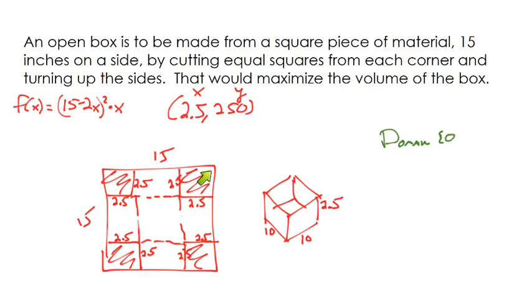And so our maximum x value would be, hopefully you're thinking about this, it would be 7.5. And the reason that I'm getting 7.5 is because if we were to, let me draw another box over here, if this whole distance is 15 I'm cutting off 7.5 from each side, I'm basically cutting out the whole thing.